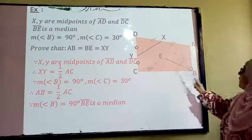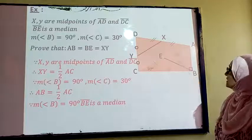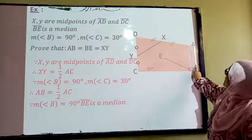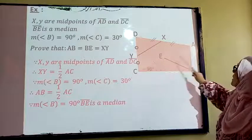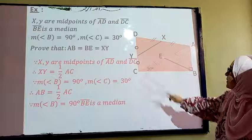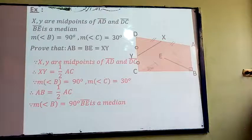Again this is a 30-60 degree case. So the side which is opposite to the 30 degree angle equals half the hypotenuse. So AB equals half AC.